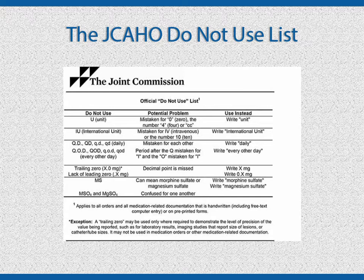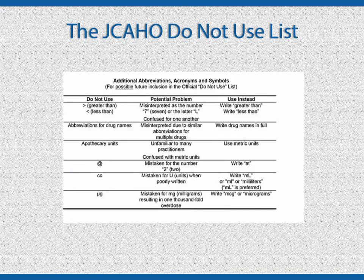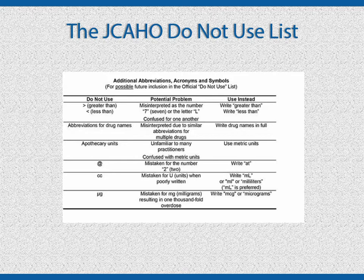We aren't going to discuss the morphine and magnesium sulfate abbreviations since we will be writing them out on the MAR. If your client was prescribed one of these medications, the pharmacist would have transcribed it to the label and the doctor should have written out the words on the prescription. Just take a few minutes to look over the additional abbreviations, acronyms, and symbols that JCAHO recommends you don't use. The only ones we may be tempted to use are the greater than, less than, and at sign — just refrain from using them, write out the words, and prevent potential problems.